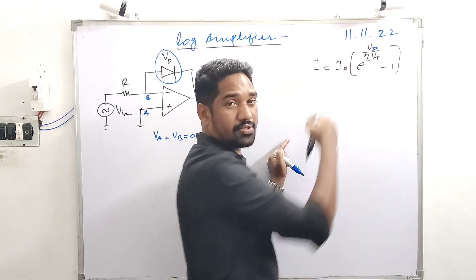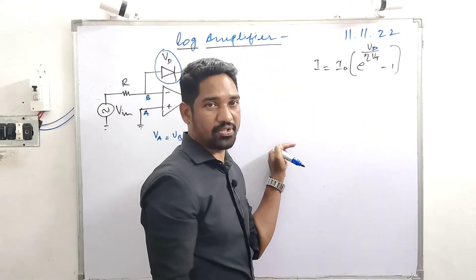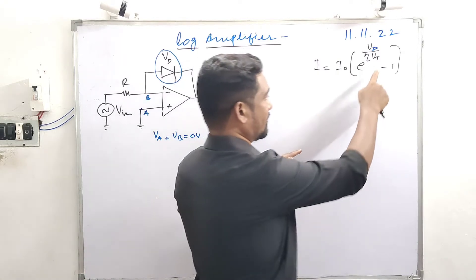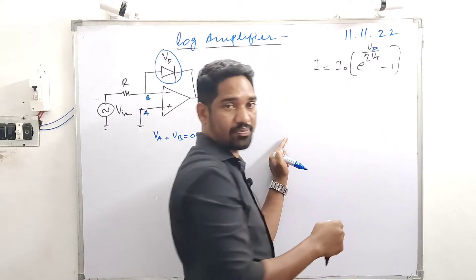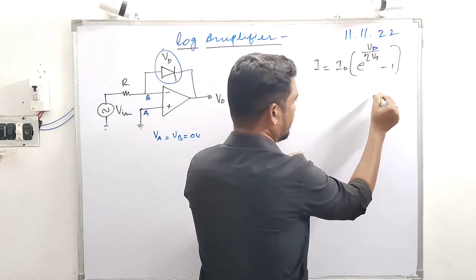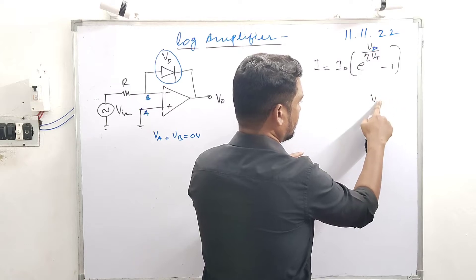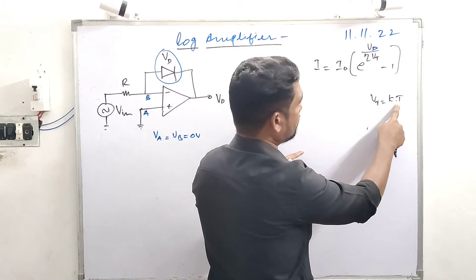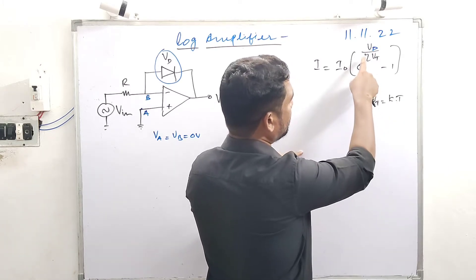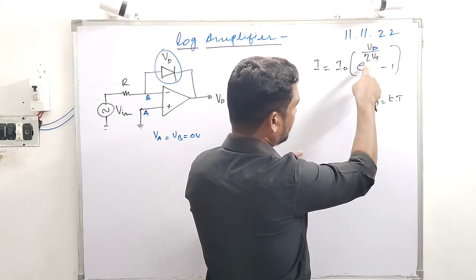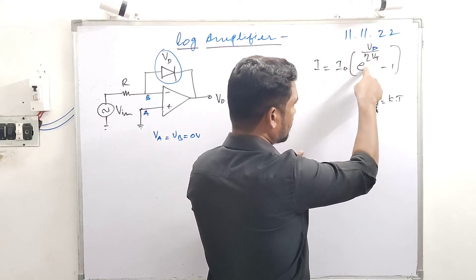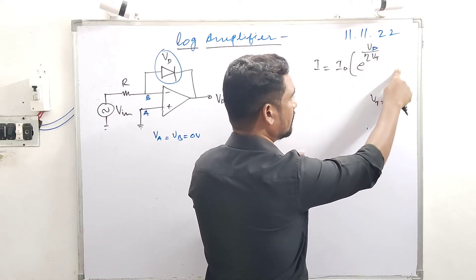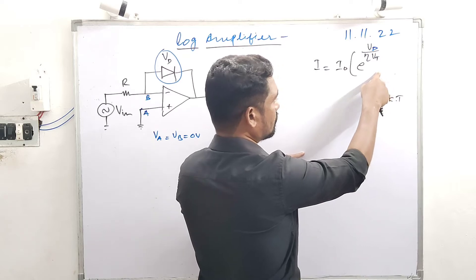At room temperature, VT is equal to 26 millivolts. This is the room temperature value at 27 degrees centigrade or 300 Kelvin. VT is temperature dependent because VT is given as VT equals k·T, where k is Boltzmann's constant and T is temperature. Under forward bias, the exponential term rises to a positive value greater than 1, so the minus 1 term can be neglected.